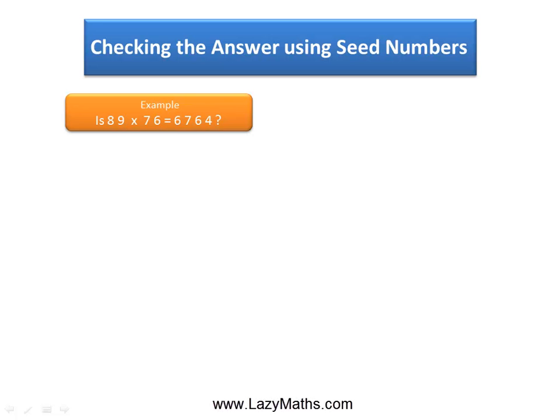Here's an example of checking multiplication using seed numbers. 89 times 76 is 6764. Let's check if this is true.